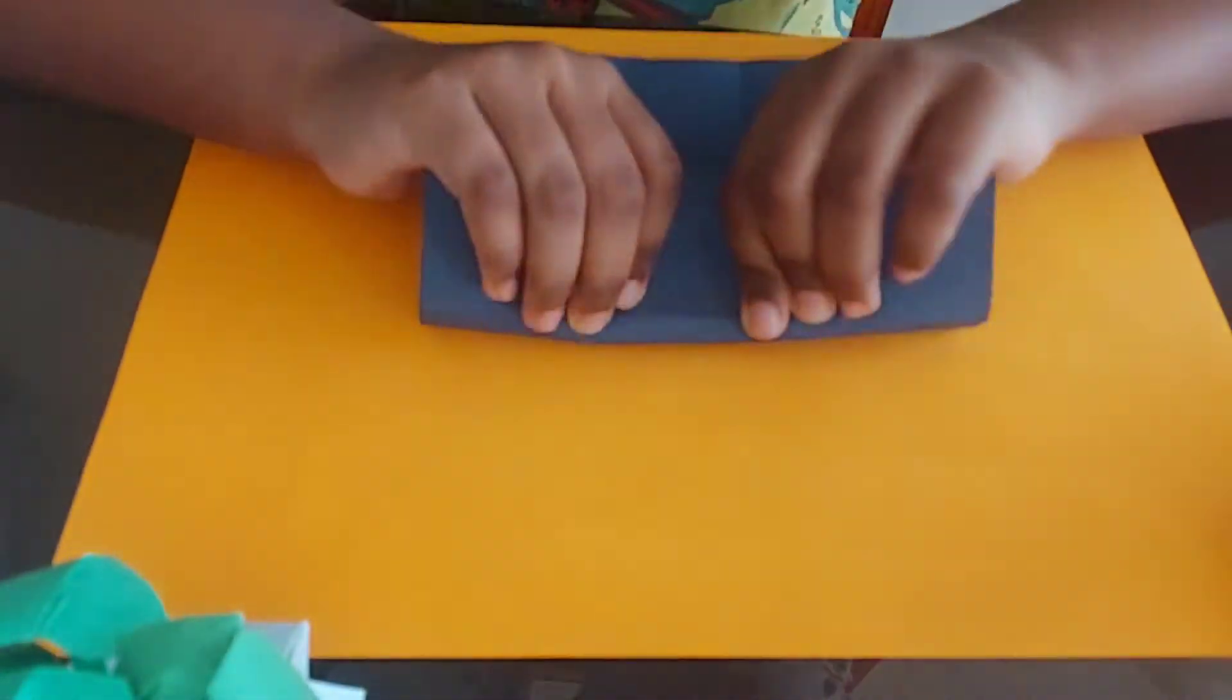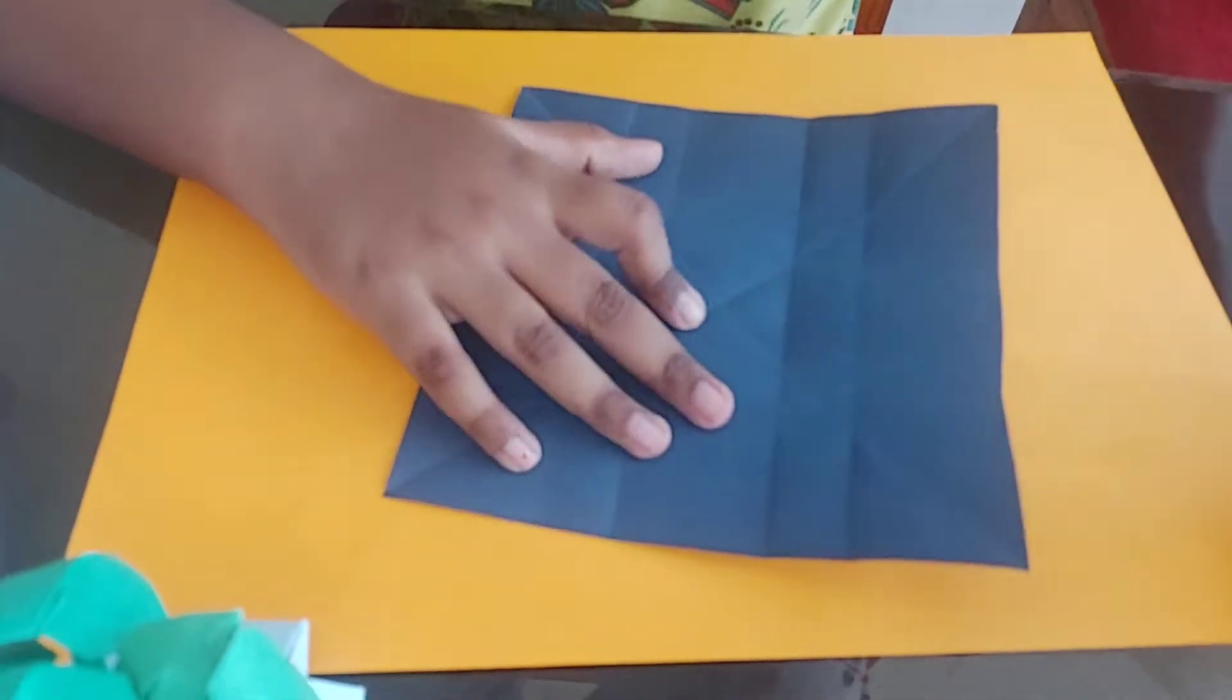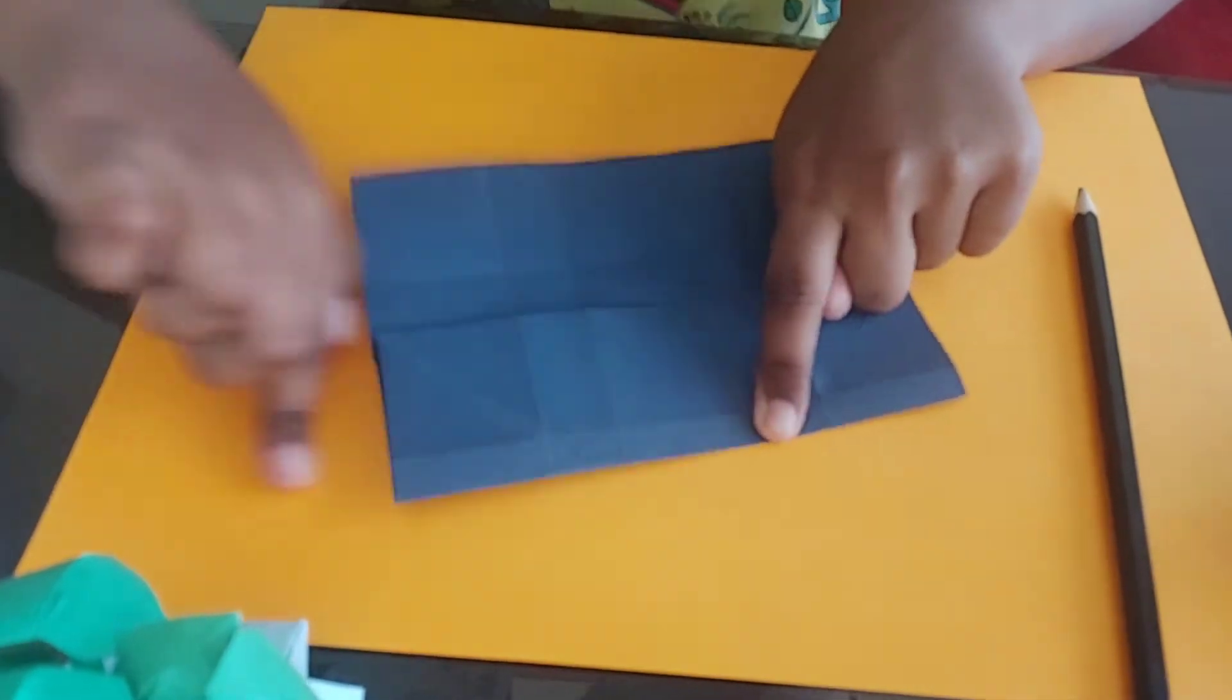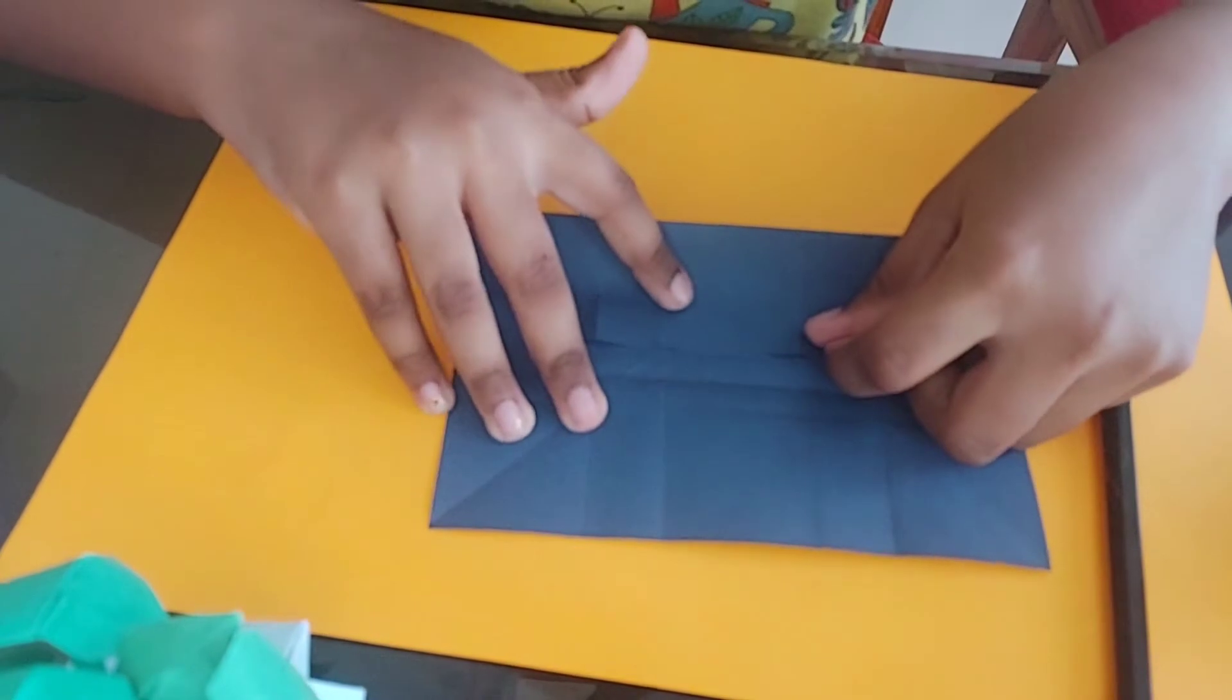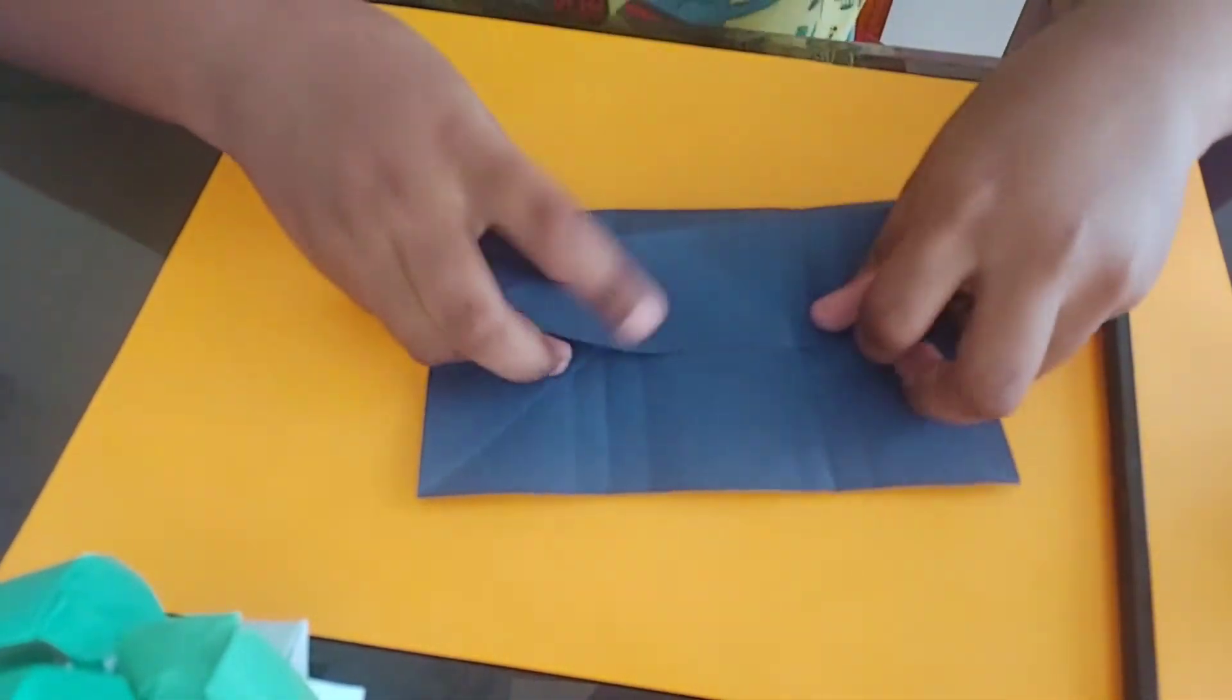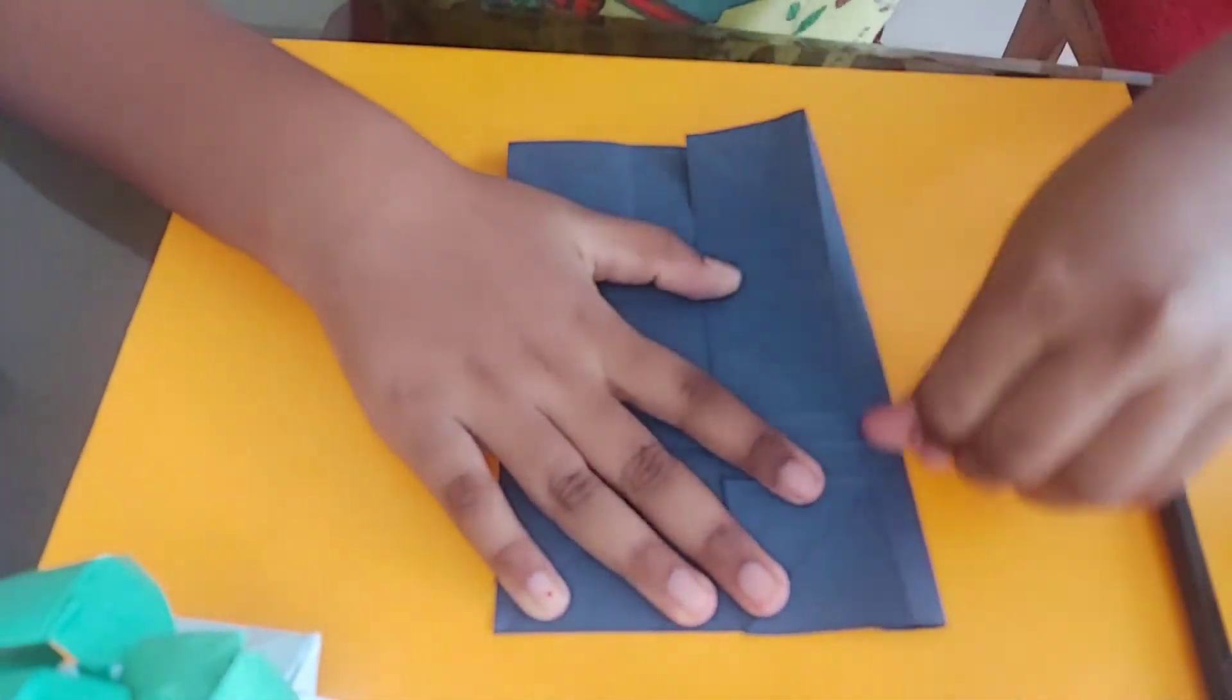Now what you need to do is you need to bring the line to the bottom. You need to fold all the blanks like that also.